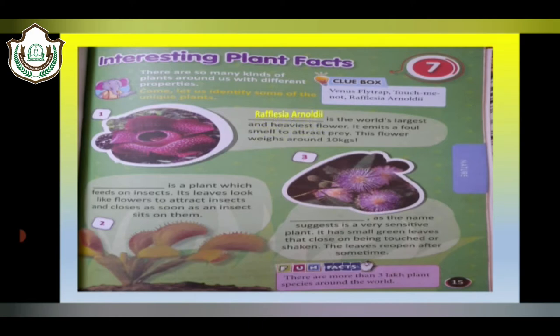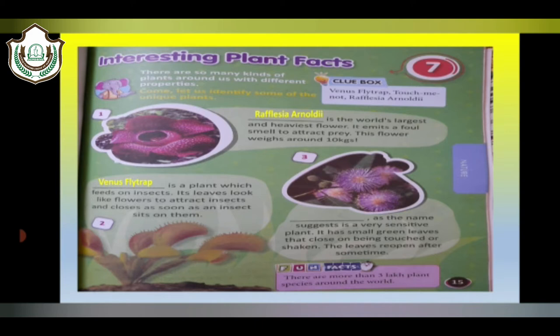The correct answer is Rafflesia arnoldi. Now move to next: Dash is a plant which feeds on insects. Its leaves look like flowers to attract insects and closes as soon as an insect sits on them. The answer is Venus Flytrap. The last one: Dash, as the name suggests, is a very sensitive plant. It has small green leaves that close on being touched or shaken. The leaves reopen after some time. And its answer is Touch Me Not.